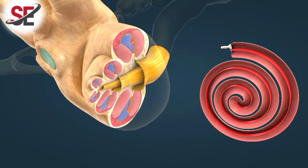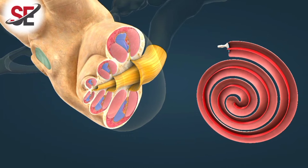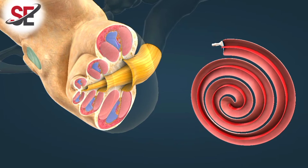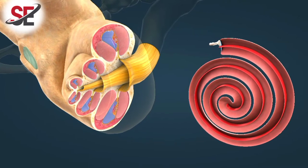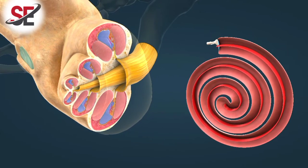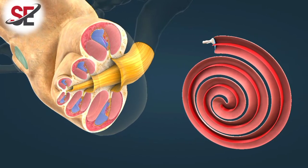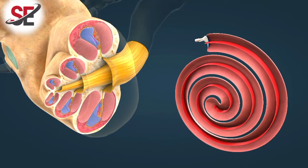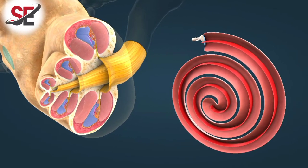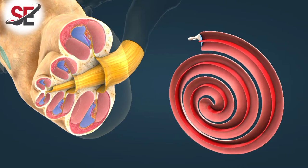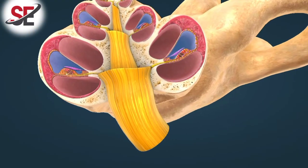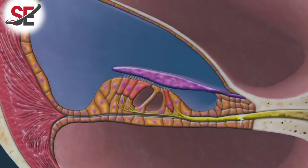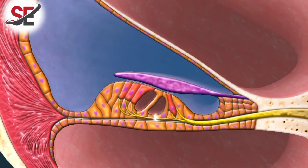Higher frequency sounds cause vibrations of higher frequency in the liquid, which are absorbed in the initial section of the membrane. Lower frequency vibrations generated by deep sounds enter the cochlea and become absorbed closer to the tip. When a vibration is absorbed, an electrical signal is produced which is transmitted into the brain. The pitch of the sound is encoded by the site of absorption — this is called tonotopy.